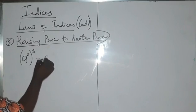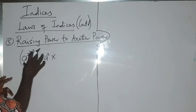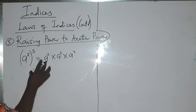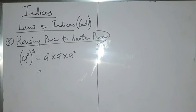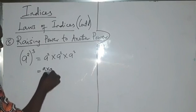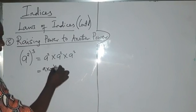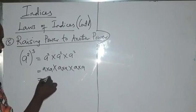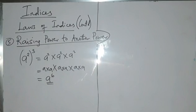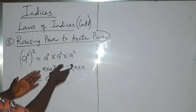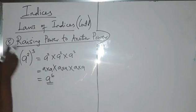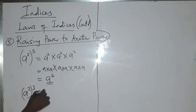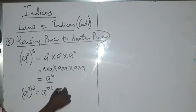It means A raised to power 2 is multiplying itself three times: A² × A² × A². We can expand each A² as A×A, giving us A raised to power 6 overall. But rather than following that long process, the law is simply to multiply the powers. So A raised to power 2, raised to power 3, equals A raised to power 2×3, which gives us A raised to power 6.